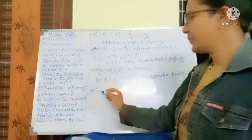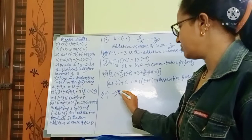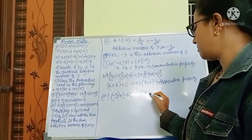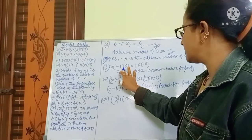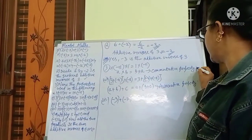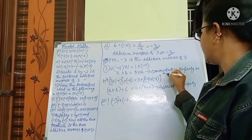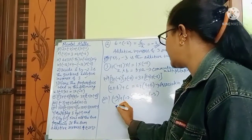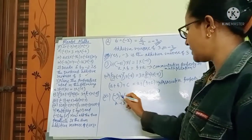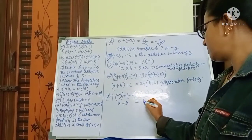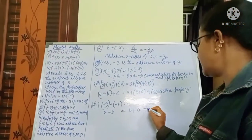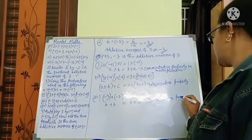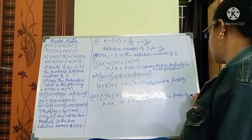The third one: minus 3 plus of minus 7 equals minus 7 plus minus 3. This is A plus B equals B plus A, where A is minus 3 and B is minus 7. It is the commutative property in addition.